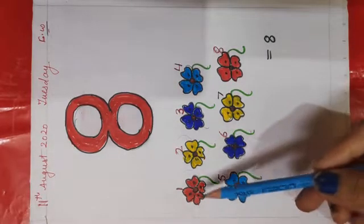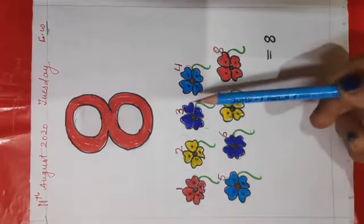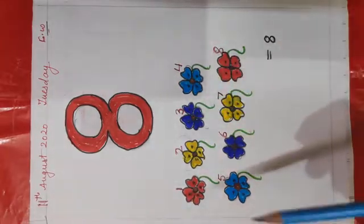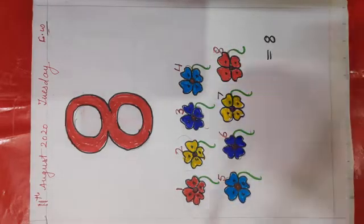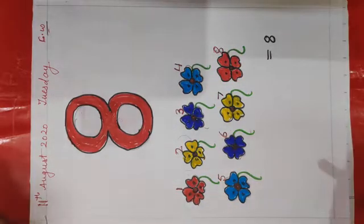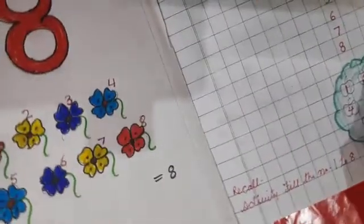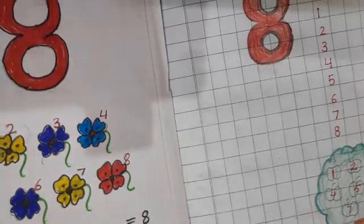Red flower, yellow flower, blue flower and sky blue flower. Four colors are there. Now, we will start how to write 8. Watch carefully.